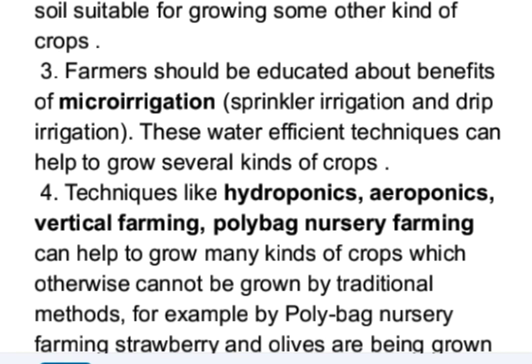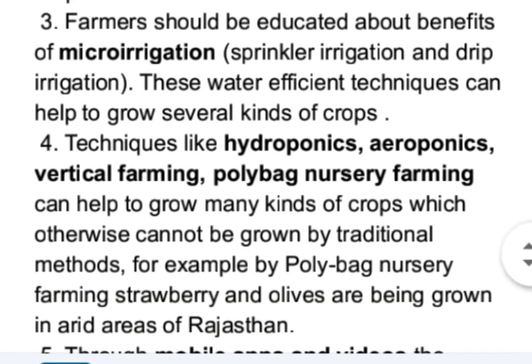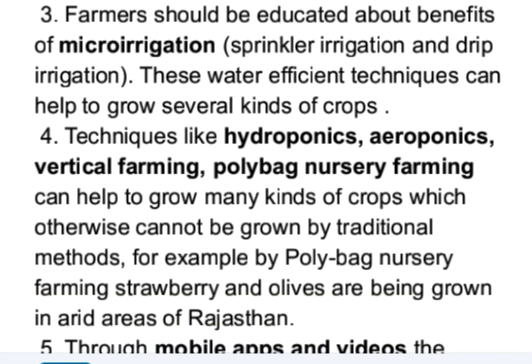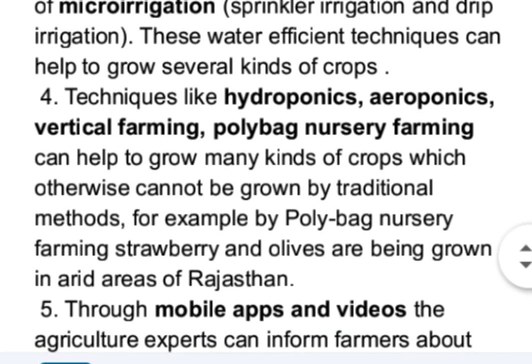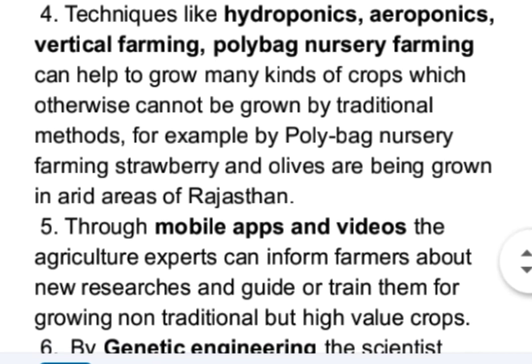Techniques like hydroponics, aeroponics, vertical farming, and polybag nursery farming can help grow many kinds of crops that otherwise cannot be grown by traditional methods. For example, through polybag nursery farming, strawberry and olives are being grown in the arid areas of Rajasthan.